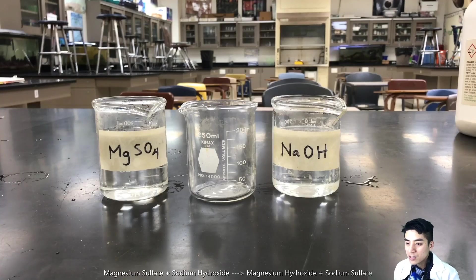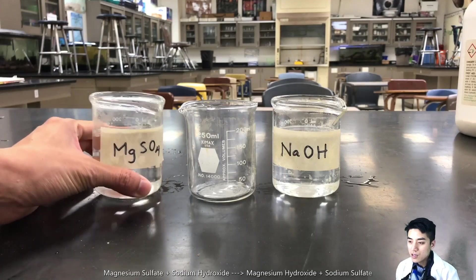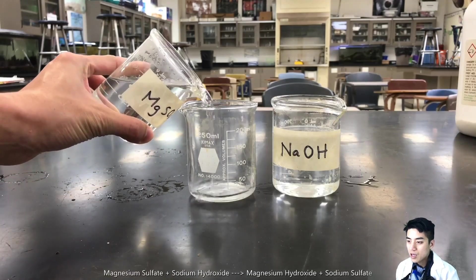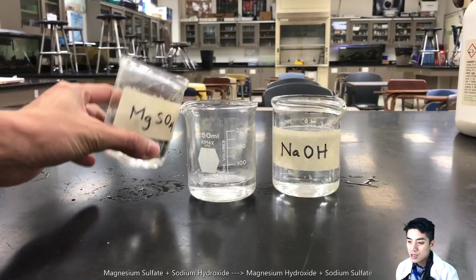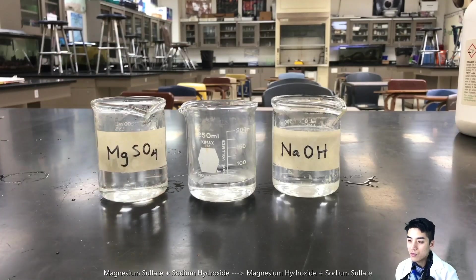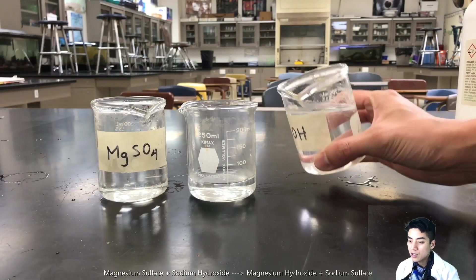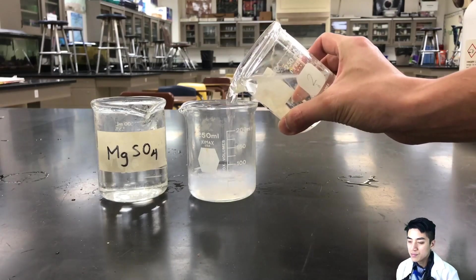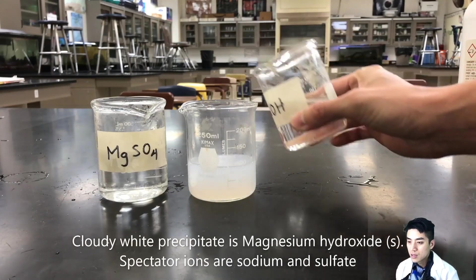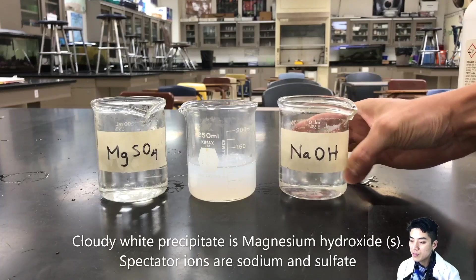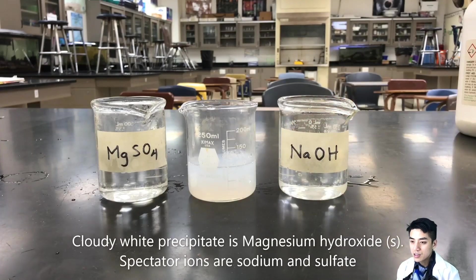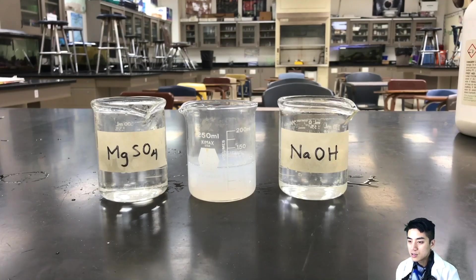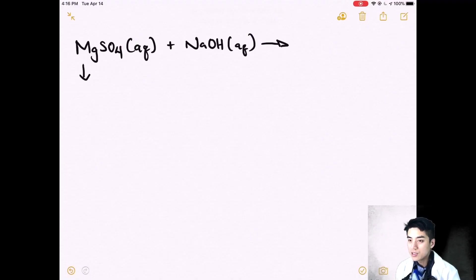Here's our second reaction. We're going to look at magnesium sulfate and sodium hydroxide, and when we combine these two it forms this bluish white cloudy precipitate. That precipitate happens to be magnesium hydroxide, and we're going to find some rules on our guidelines to determine which one was the precipitate.